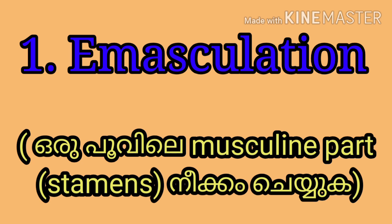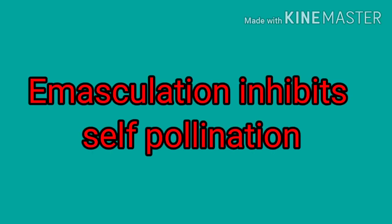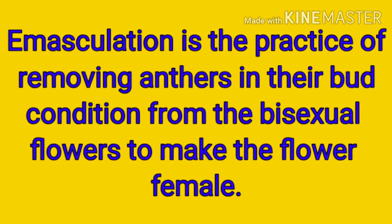Emasculation is the practice of removing anthers in their bud condition from bisexual flowers to make it a female flower. In this process, the androecium is removed so that self-pollination is prevented.